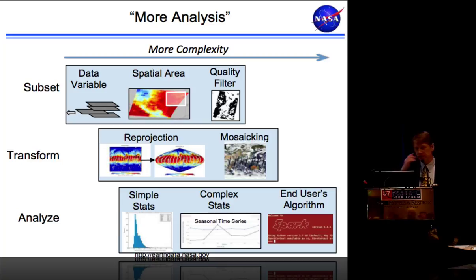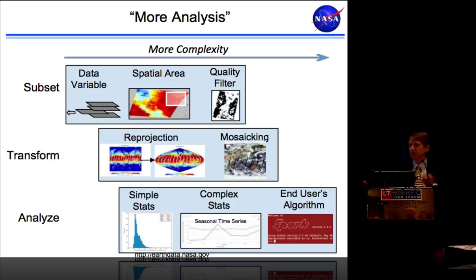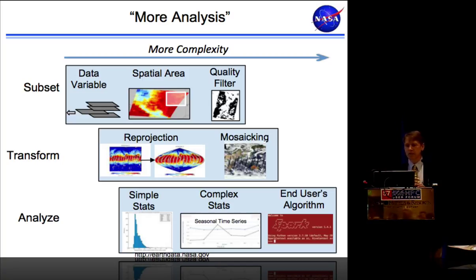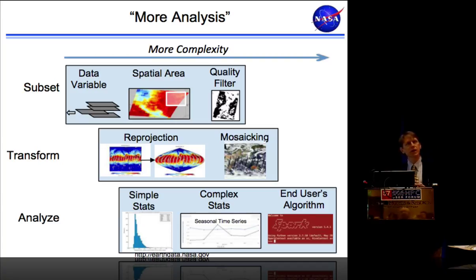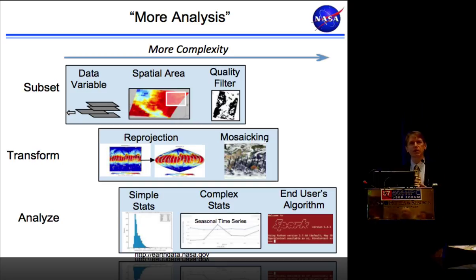Looking at 'more analysis': analysis at an archive has many different meanings, starting with simple subsetting. Subsetting is a continuum that starts with pulling a data variable out of a file, to subsetting a spatial area — particularly tricky with satellite swaths that aren't in a rectilinear grid — and further to quality filtering the data. Here I'm showing a mask applied to AIRS level 2 data. We don't throw out any data; we keep it all but mark it with quality flags. The archives also provide reprojection and mosaicing services, which are somewhat tricky due to potential information loss.